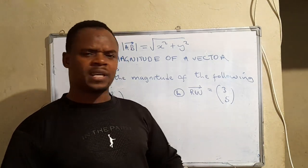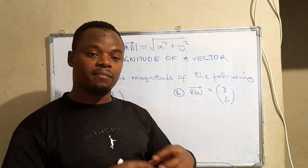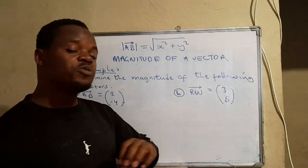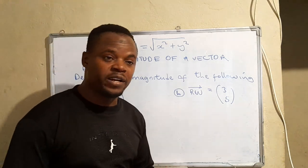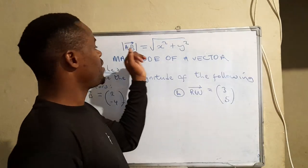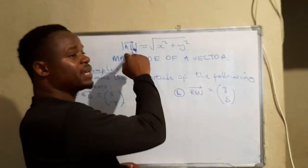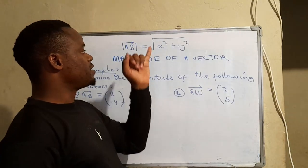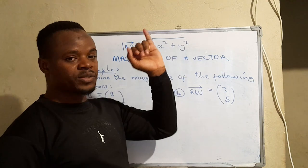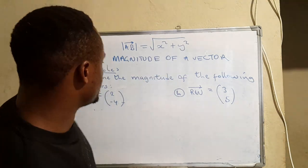It could be the length or the size of the vector. So that's what magnitude means. To determine the magnitude of a vector we make use of that formula on top, that is |AB| equals the square root of x squared plus y squared. So let's look at these examples.